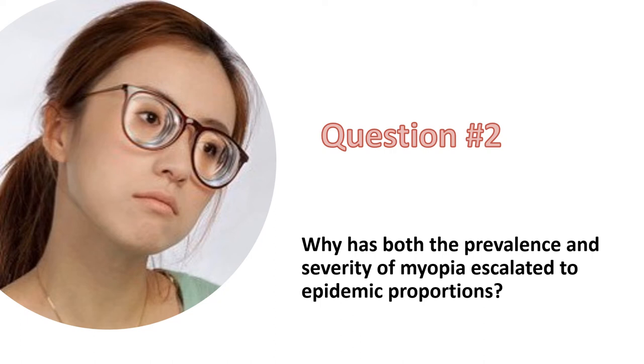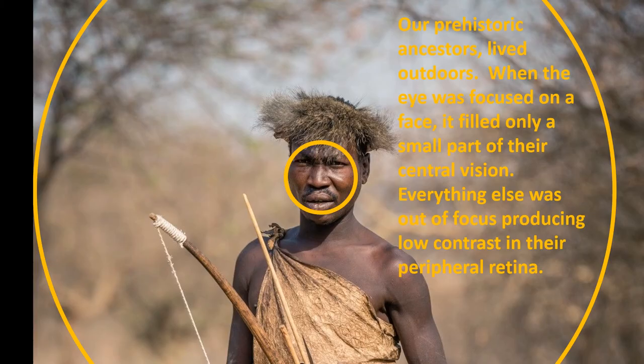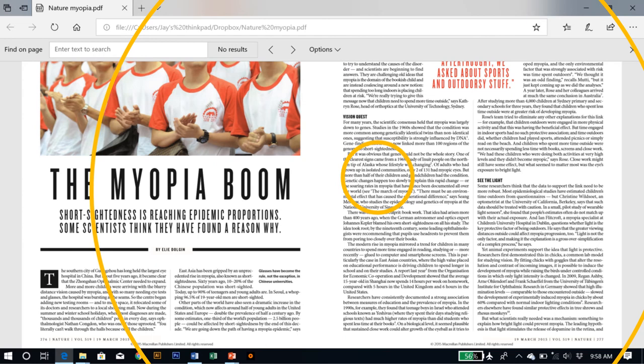This brings us to question number two: Why has both the prevalence and severity of myopia escalated to epidemic proportions? For our prehistoric ancestors living outdoors, when the eye was accommodated to seeing things clearly with foveal vision—the things they were focused on, like the face of someone they're interacting with—filled only a tiny part of their central vision. This means that when a person has normal vision and is not far-sighted, the distant scenery that fills most of their vision is out of focus, producing low contrast in their peripheral retina.